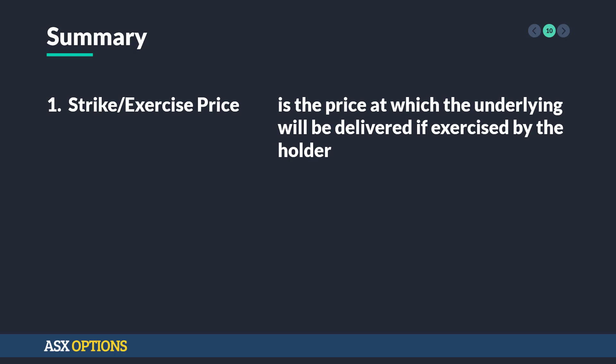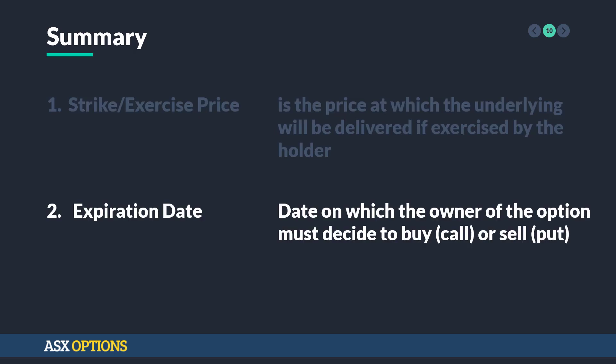So in summary, the strike or exercise price is the price at which the underlying will be delivered if exercised by the holder. And the expiration date is the date on which the owner of the option must decide to buy in the case of a call, or sell in the case of a put. Thank you very much for listening to ASX Options. Please join us for the next video.